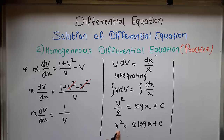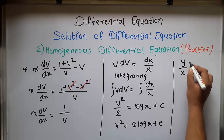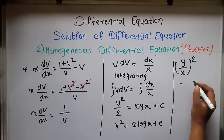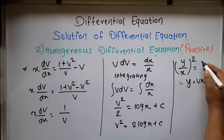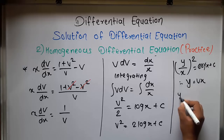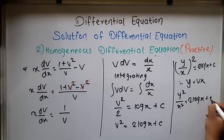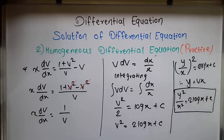Now, we substitute back the value of v. Since we put y equal to vx, v equals y/x. Substituting, we get (y/x)² equal to 2 log x plus c, which gives y² upon x² equal to 2 log x plus c. This is our final solution of the homogeneous differential equation. Thanks for today.